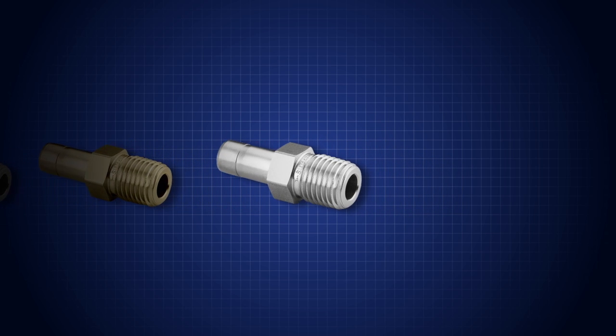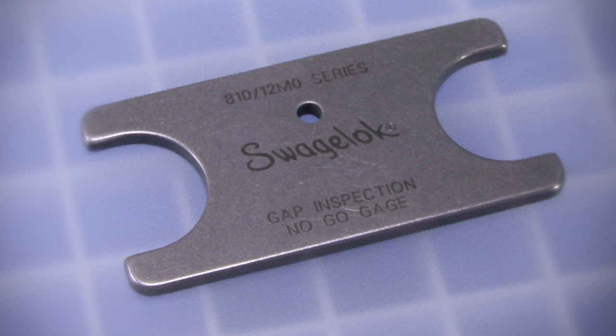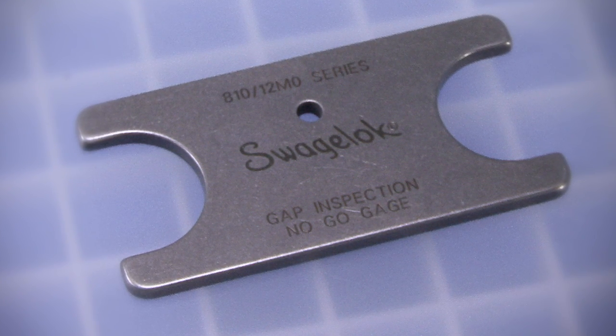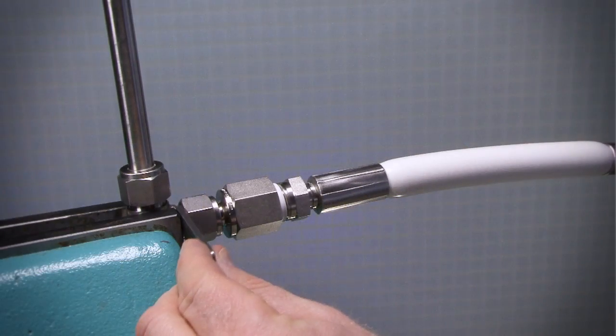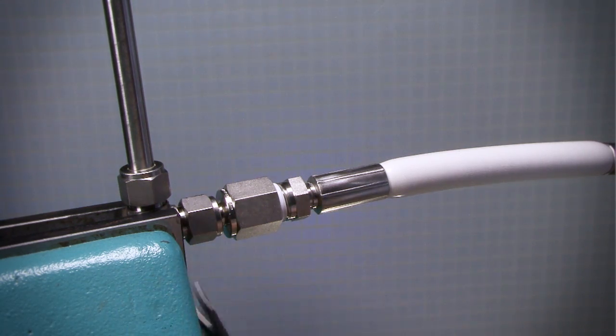Tube adapters one inch and under are gaugeable using the Swagelok gap inspection gauge. On initial installation, the Swagelok gap inspection gauge assures the installer or inspector that the fitting has been sufficiently tightened.